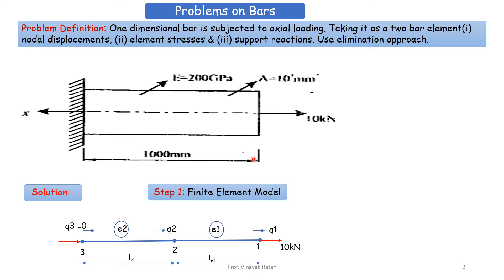The length of the bar is 1000 mm. One end is fixed and the other end has a load of 10 kN applied. The cross-sectional area is 10 mm² and Young's modulus E = 200 GPa. The direction of x is indicated — when dividing into elements, node numbers are given from right to left.